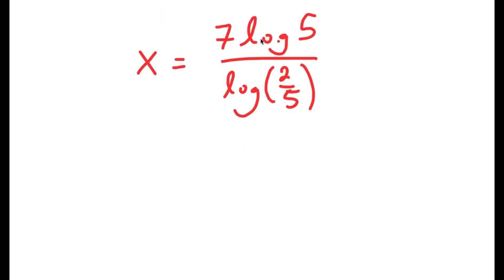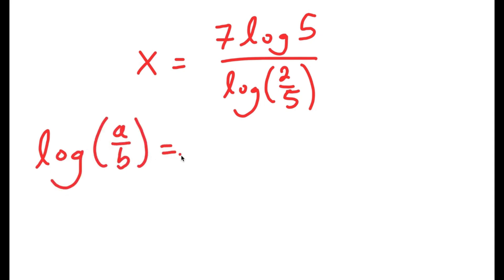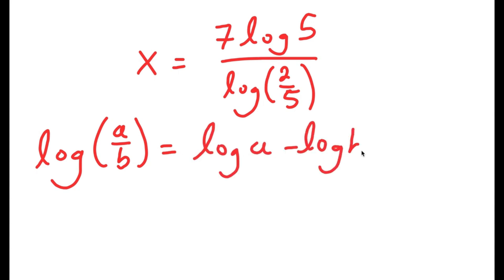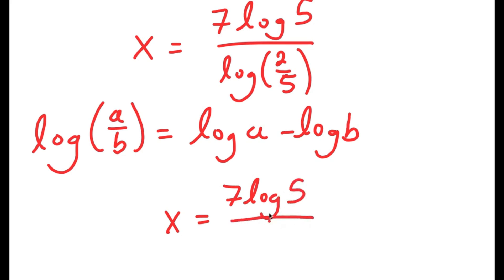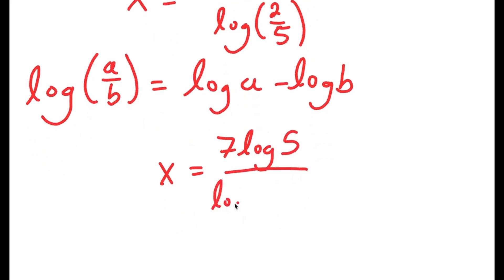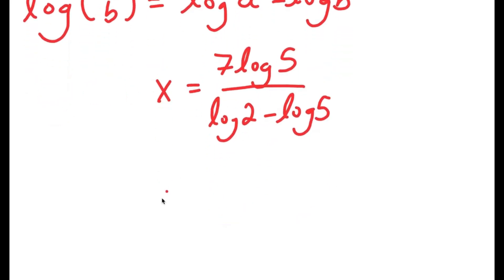We have our answer, but there is a way to simplify it further. Using the property that log of a over b equals log a minus log b, log of 2 over 5 becomes log 2 minus log 5. So x equals 7 times log 5 over log 2 minus log 5.